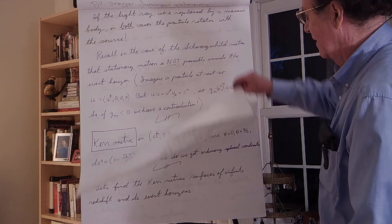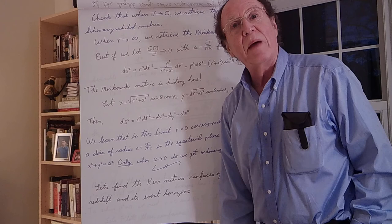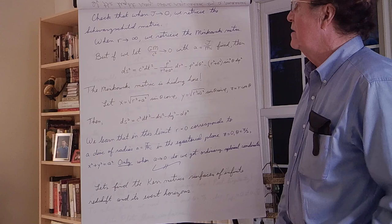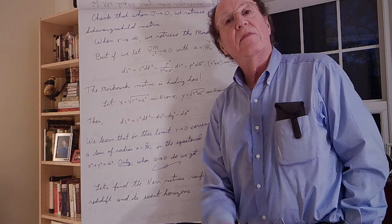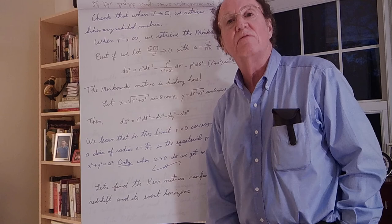The first thing you want to do is check that you haven't made an error. We should check that if the object is not rotating we get back the Schwarzschild metric. Just take J to zero and check that you get the Schwarzschild metric — that's an easy exercise. You'll be making friends with these formulas that have a lot of moving parts. Then check that when r goes to infinity — very far from the mass — its influence on the metric should go away and we should retrieve the Minkowski metric, and we do so in a smooth way.